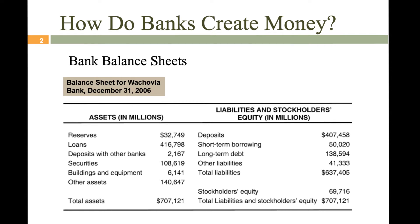Another thing we want to note here is something called reserves. Reserves are simply deposits that the bank is keeping either physically as cash right there on the premises in its vault, or on deposit with the Federal Reserve. Whether they are physically there in the bank or at the Federal Reserve, those are basically considered cash on hand for the bank, and the word we use for that is reserves.